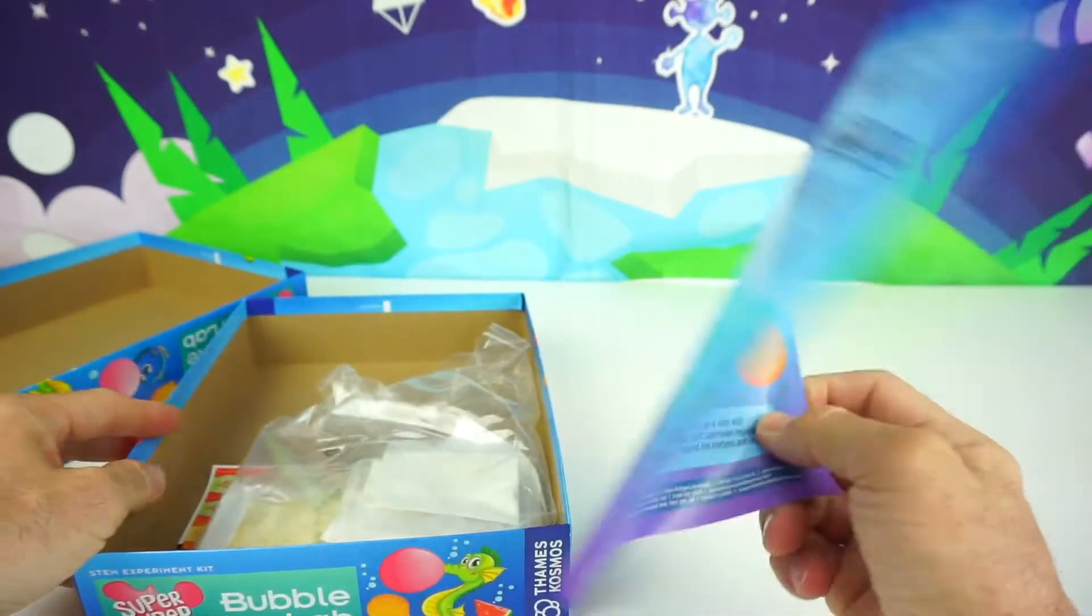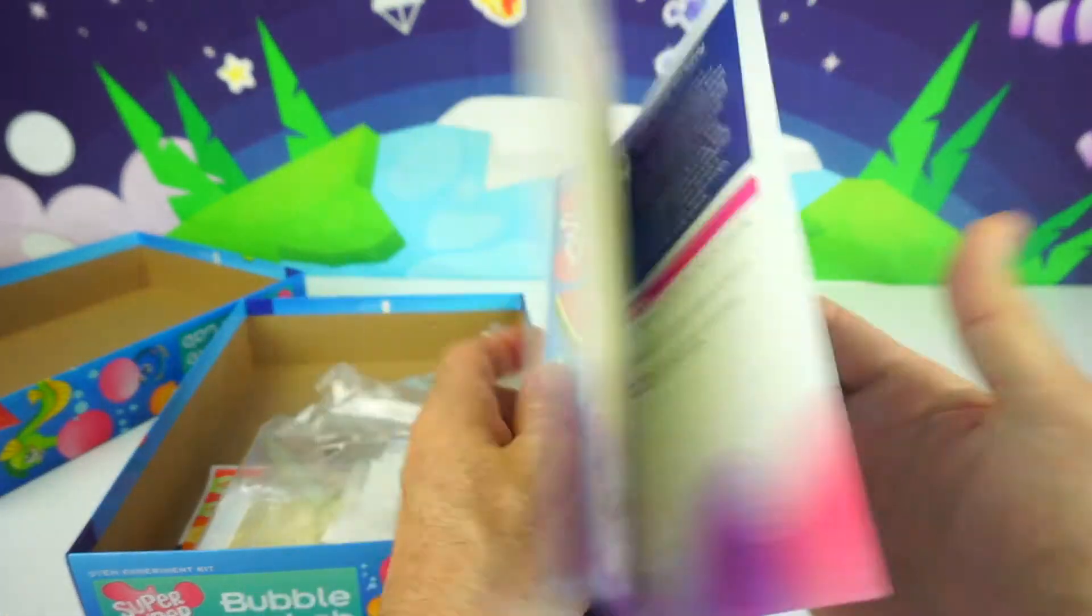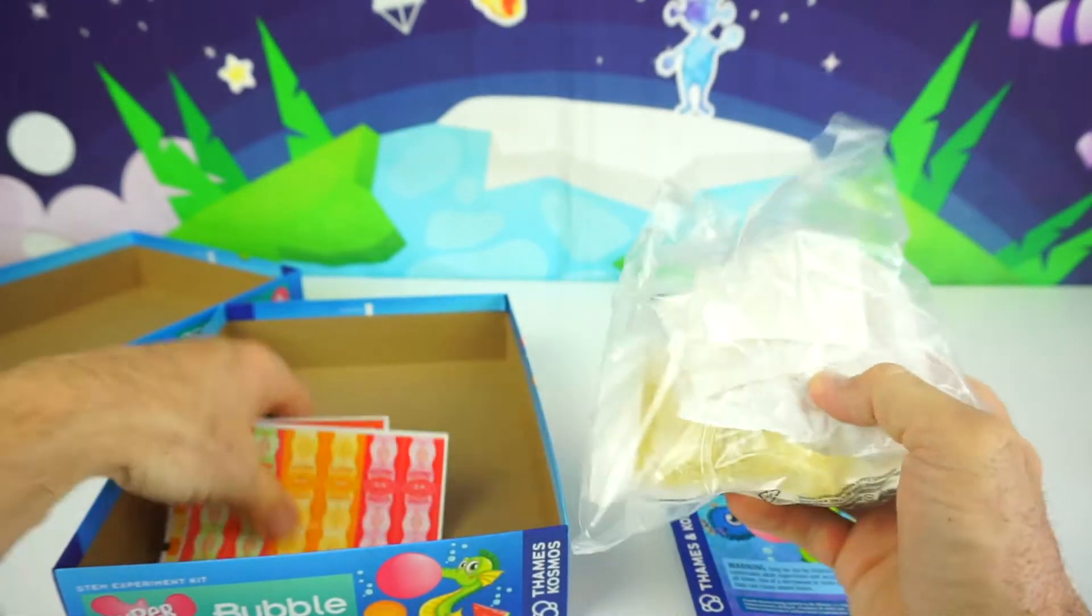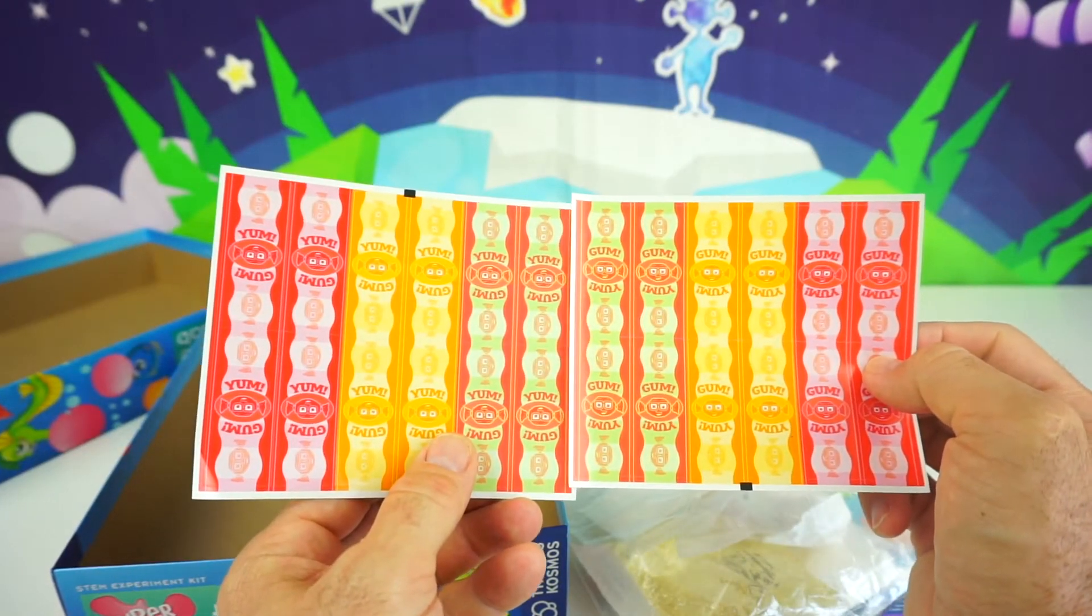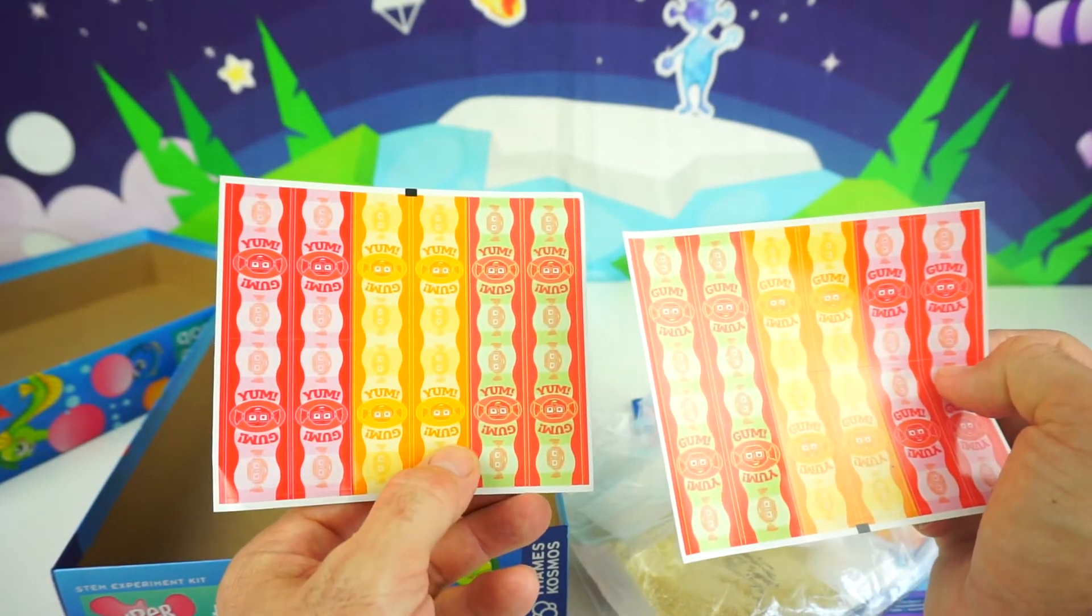Alright, so here is our manual right here. 16 pages. And our contents. And we also have some of these stickers. These are for bubblegum wrappers. We have the orange, the classic, and the watermelon stickers.